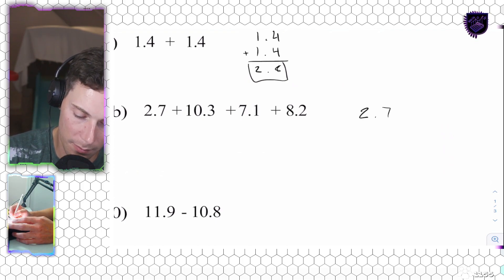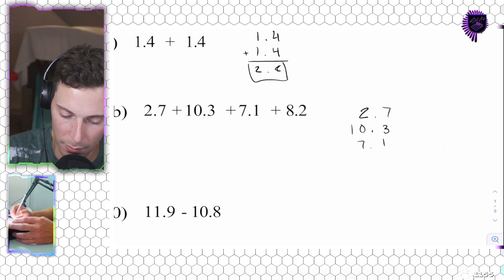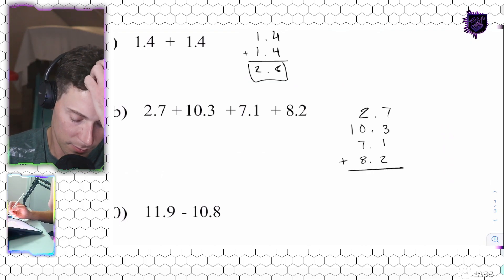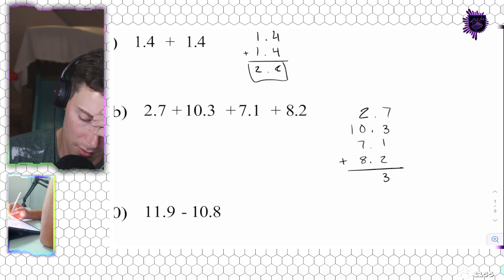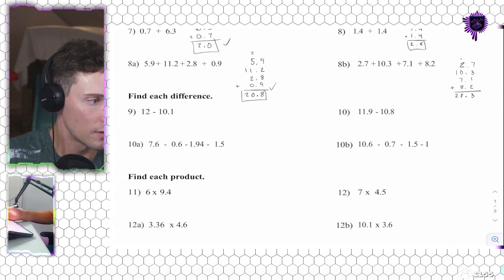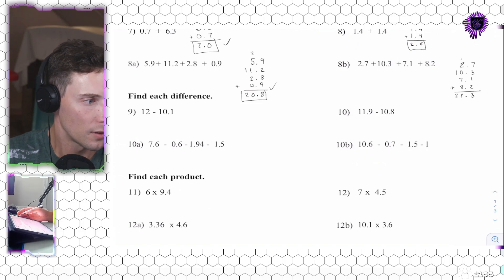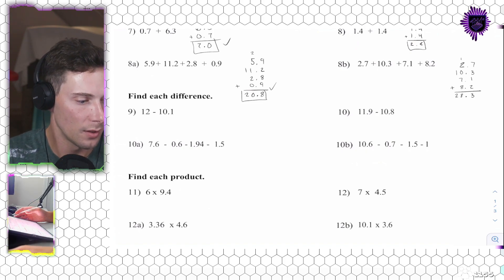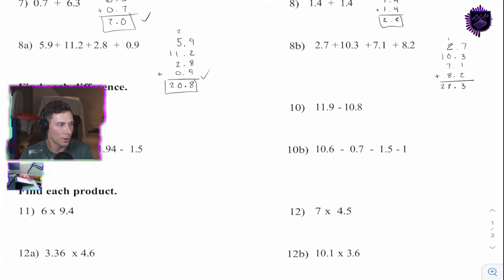2.7. 10.3. 7.1. 8.2. Line them all up. Add them. 10, 11, 13. Carry the 1. 3. 10. Sorry. 3. 10. 18. 28. Put my decimal. You can't see my hand writing, necessarily. Let's go to this camera. Okay.